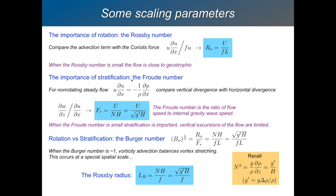Then there's the Froude number, which is a bit more tricky. We talk about steady non-rotating flow where this steady acceleration term is balanced by the pressure gradient force. In that framework, we compare vertical divergence with horizontal divergence — dw/dz versus du/dx. If you do a scale analysis of that ratio, it's a rather intricate and complicated scale analysis. The result is the Froude number, which is u — the flow speed — divided by N times H, where N is the Brunt–Väisälä frequency, a vertical gradient of density.